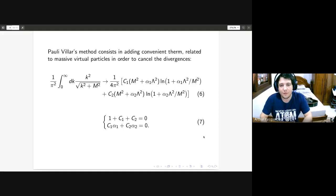There's Pauli-Villars method that consists in adding convenient terms related to massive particles in order to cancel the divergence. We need to make sure that those terms of C and alpha obey this system of equations number seven to ensure that in the vacuum this integral does not diverge.